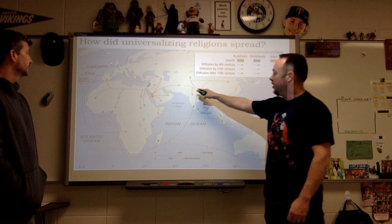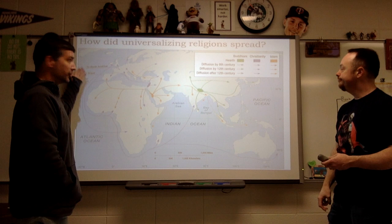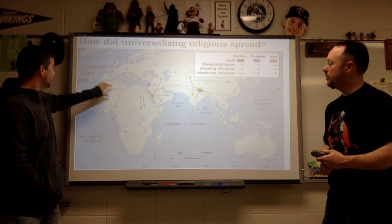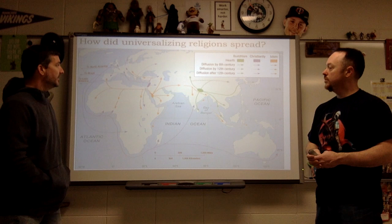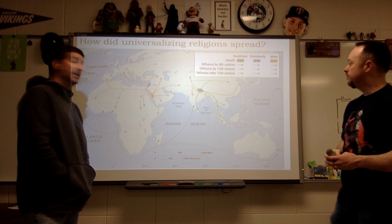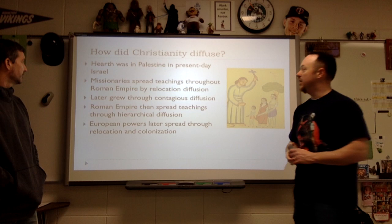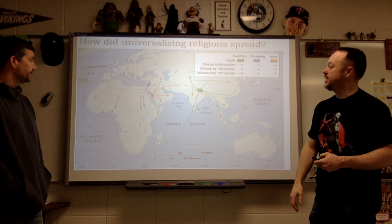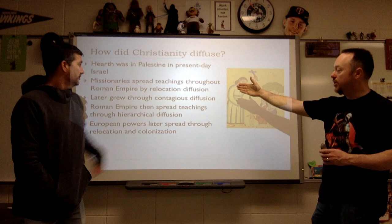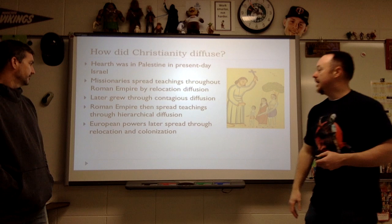Looking at how universalizing religions spread using their hearths: Christianity spreads to Europe, and then through colonialism spreads to Latin America via the Catholic Church. Islam spreads all the way up into Spain and into Europe. Buddhism, though we think of it as an Eastern religion today, started in South Asia — in India and Nepal. The hearth for Christianity falls into what they call Palestine, present-day Israel. Over time it spread through missionaries, through contagious diffusion, relocation diffusion, and later hierarchical diffusion. For Islam, followers were organized into armies and spread through trade and through the sword to different parts of the world, starting in Mecca and working both east and west through conquest and trade.